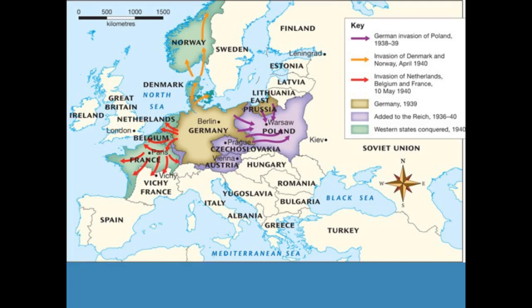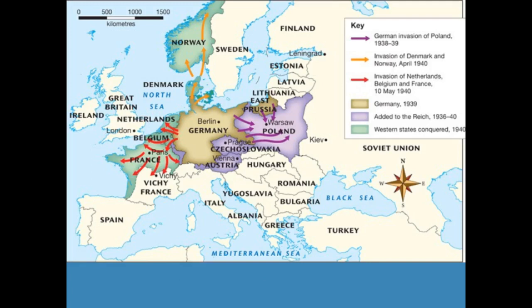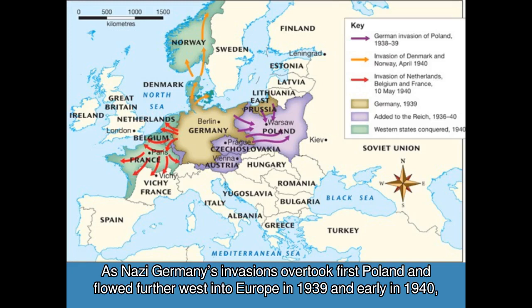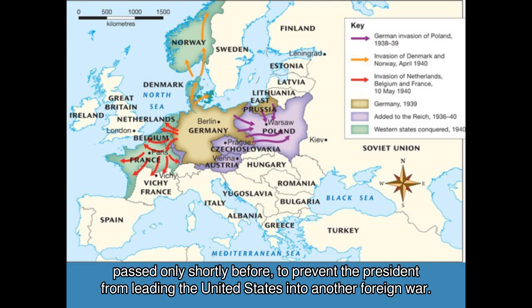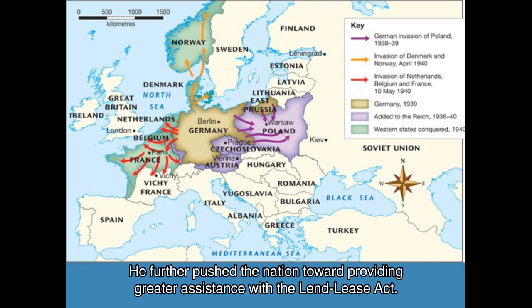Navigating isolationist legislation: as Nazi Germany's invasions overtook first Poland and flowed further west into Europe in 1939 and early 1940, Roosevelt tried to balance his understanding of the urgent need to assist France and Great Britain with adherence to the Neutrality Acts, passed to prevent the President from leading the United States into another foreign war. He further pushed the nation toward providing greater assistance with the Lend-Lease Act.